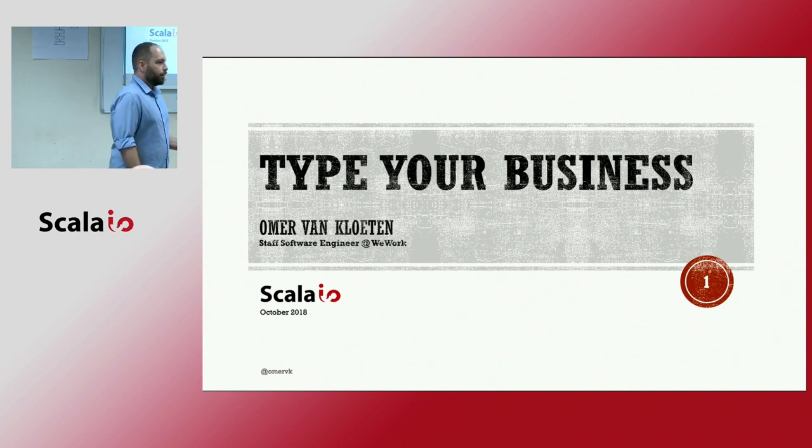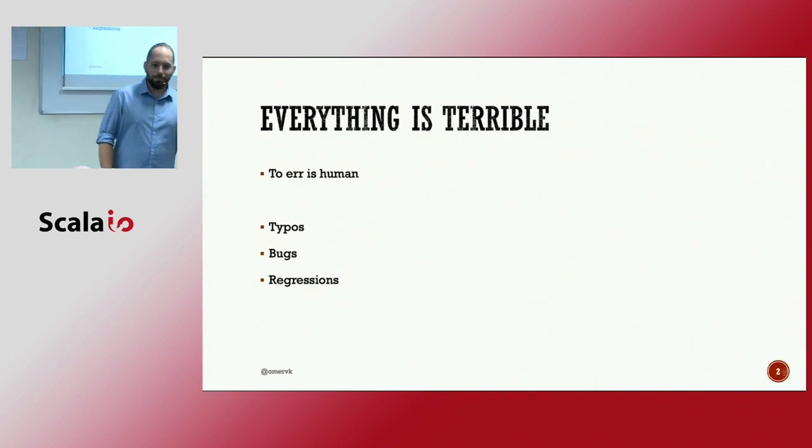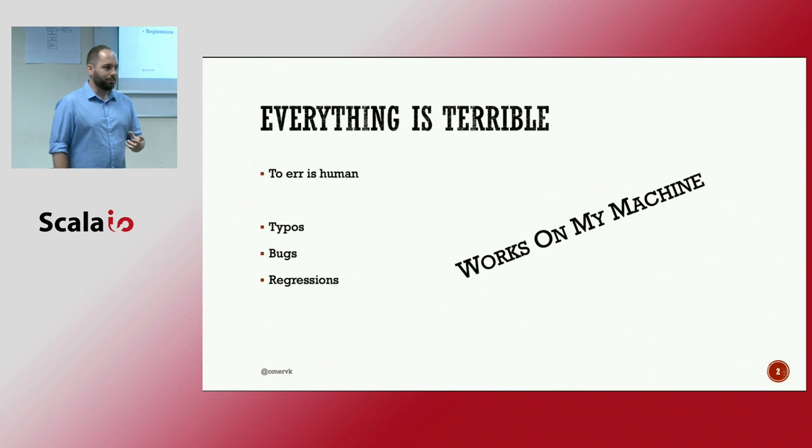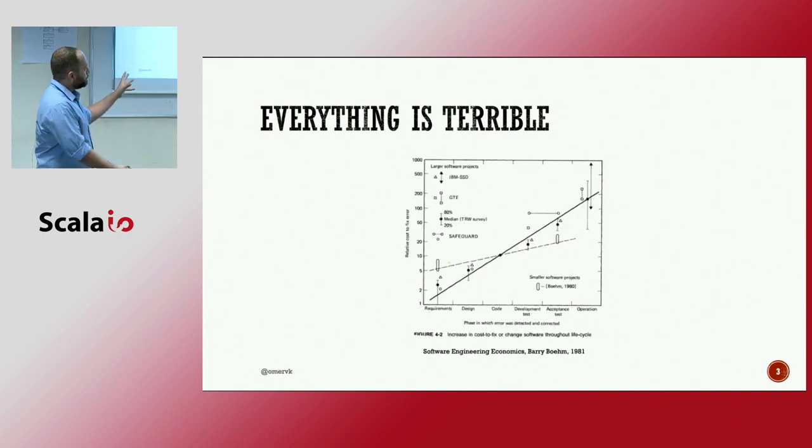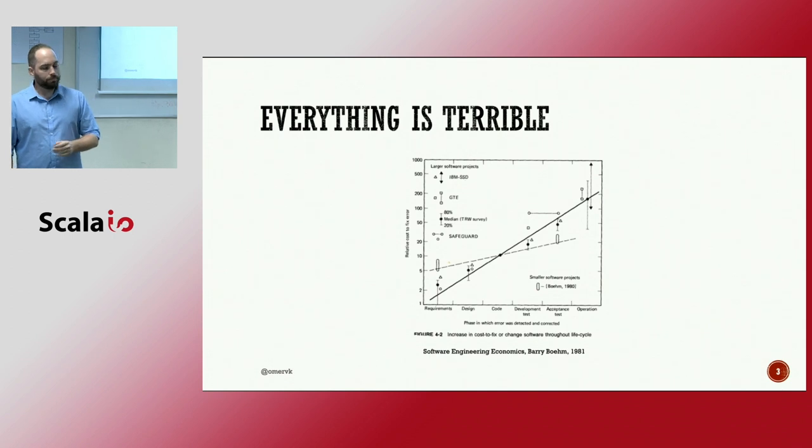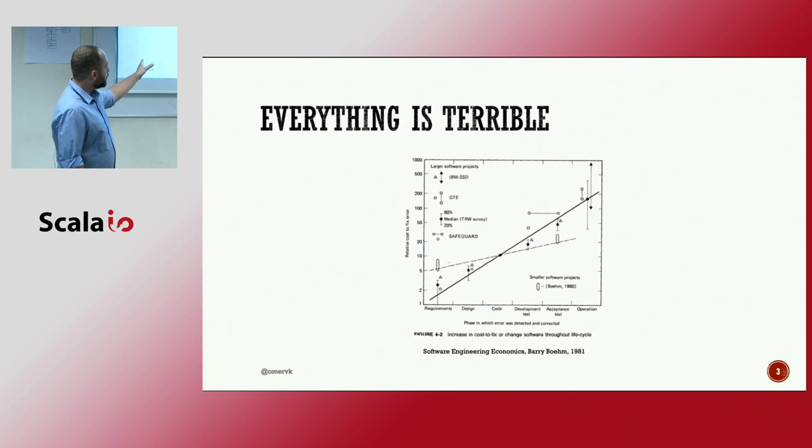So let's start with something a little upbeat. Everything is terrible. We are human, and to err is human. So we have typos. We have bugs. We have regressions. We keep saying it works on my machine. It doesn't work on any other machine. It just works on mine, so that's enough, right? And I want to show a graph here. This is a graph that depicts the cost of fixing an issue over the lifetime of a system. So you can see in the beginning, it's a requirement all the way to operation, and it grows. The cost grows.